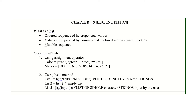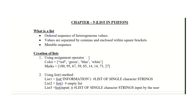Hello all, today we are going to study ordered sequence, which is called as list in Python. A list is an ordered sequence of heterogeneous values — a combination or collection of values separated by commas, where all values can be of different or similar data types depending on the requirement. All elements of the list are enclosed within square brackets, which is the indication of a list in Python.